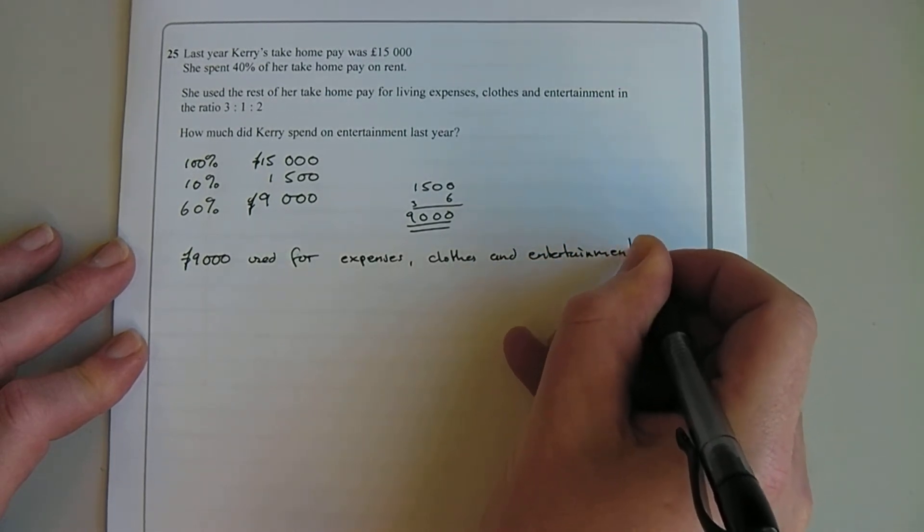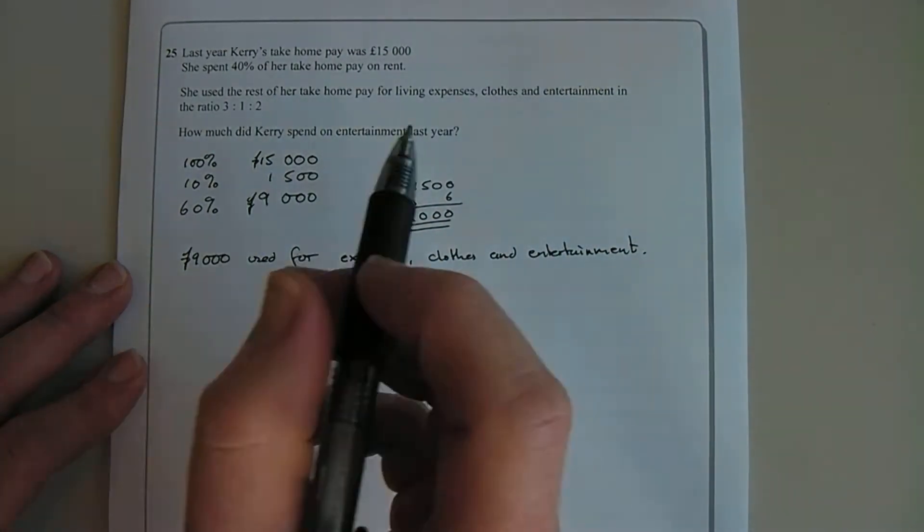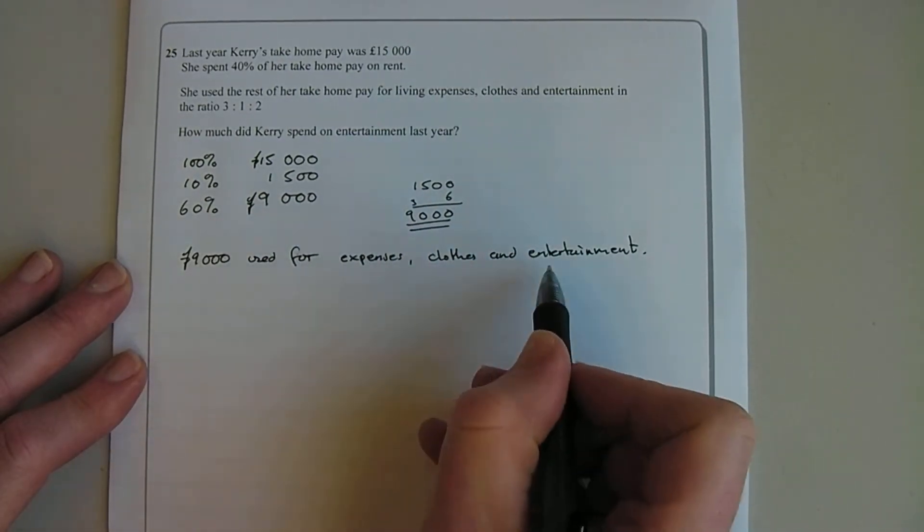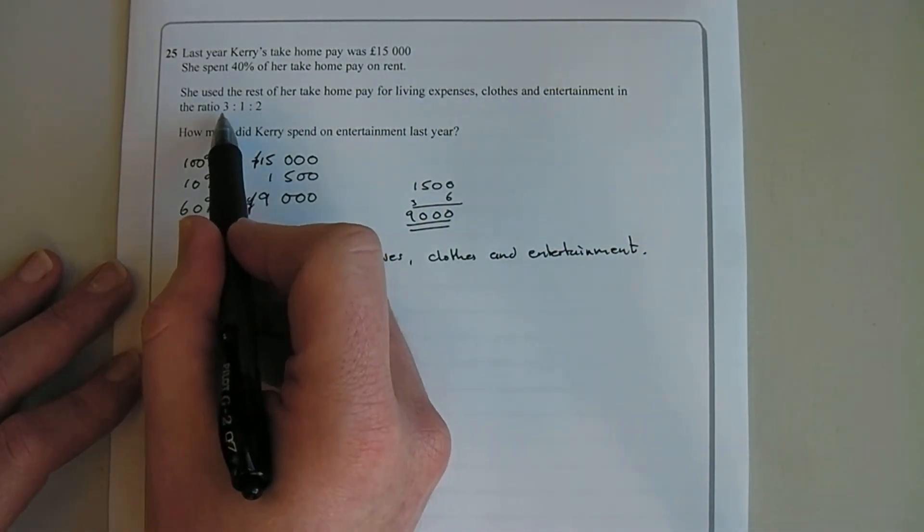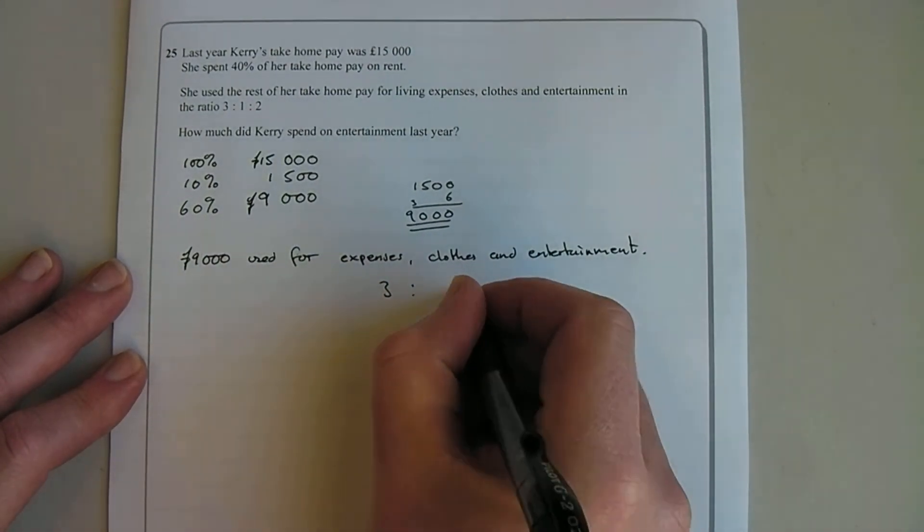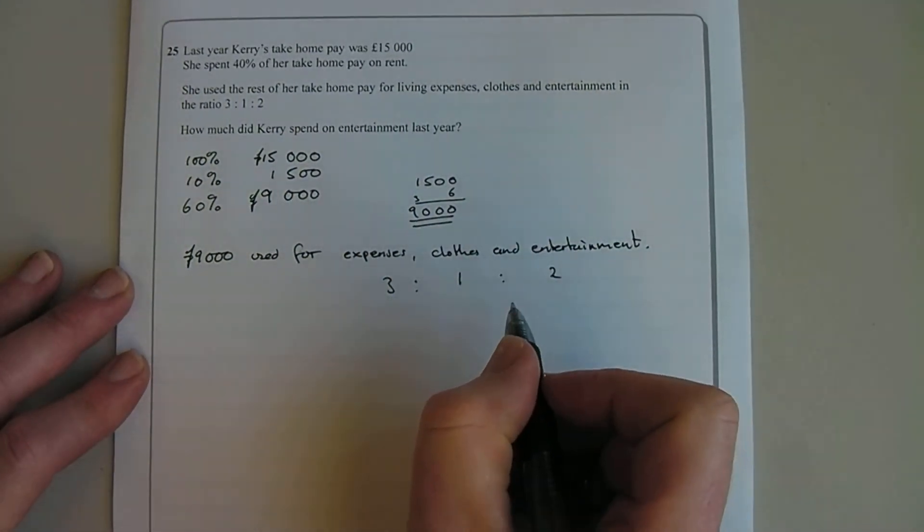And it's worth writing a sentence like that so you can show what you've done. Right, next thing. She used the rest of these for expenses, clothes and entertainment in the ratios of 3 to 1 to 2. So in the ratios of 3 for expenses, 1 for clothes and 2 for entertainment. Okay, so nice little trick here.